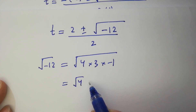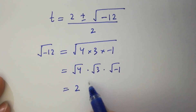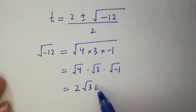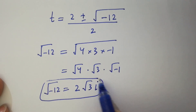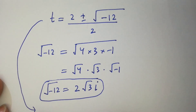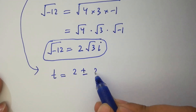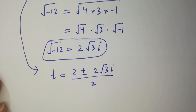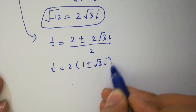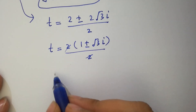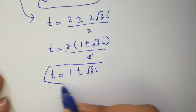It can be written as square root of 4, times square root of 3, times square root of minus 1. Square root of 4 is 2, square root of 3 stays as is, and square root of minus 1 is i from complex numbers. So square root of minus 12 equals 2 square root of 3 times i. Then t equals 2 plus or minus 2 square root of 3i, over 2. The 2s cancel, giving t equals 1 plus or minus square root of 3i. So we have 2 complex solutions here.